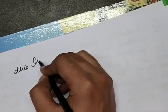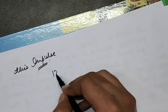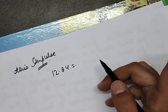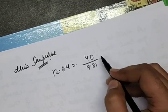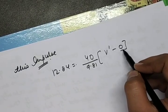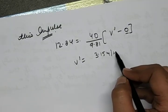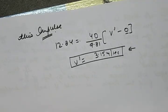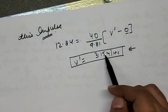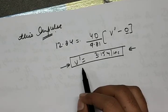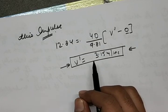Now applying the equation for the block: this impulse acts on the block which is initially at rest and changes its state of motion. The impulse of 12.84 Newton-seconds equals the mass of the block times its final velocity. The block's mass is 40 Newtons divided by g, and initially it is at rest. The final velocity of the block comes out to be 3.15 meters per second.